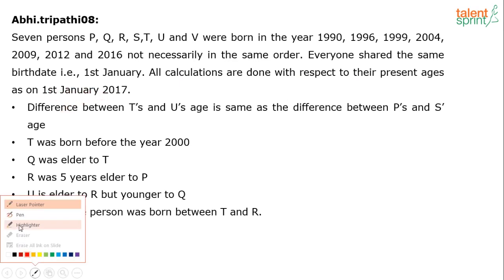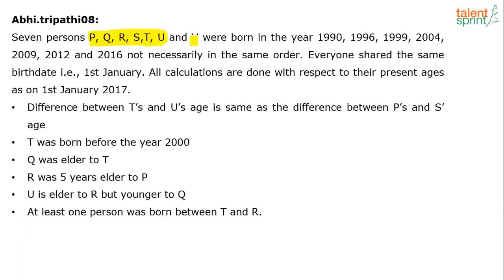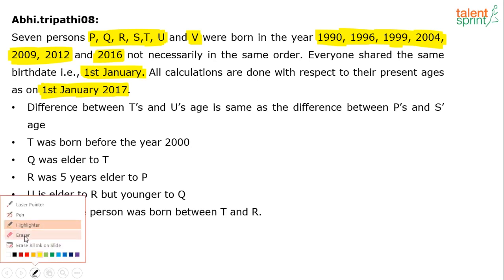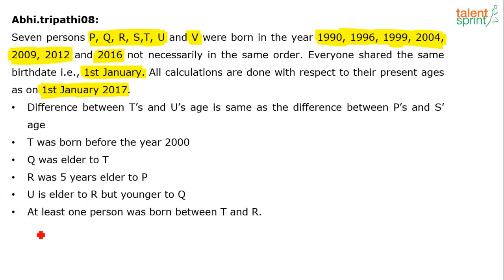So basically we have seven persons P, Q, R, S, T, U and V, and seven different years of birth. All we need to do is find out which person was born in which year. Since all persons were born on 1st January and all calculations are with respect to 1st January 2017, we don't need to worry about different months within the same year, which makes it a little simpler.